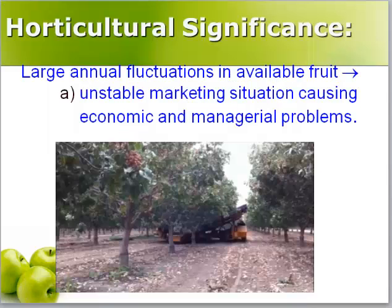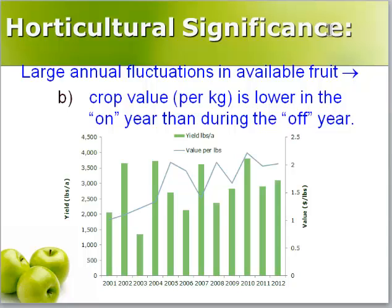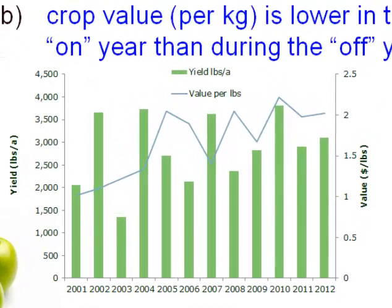Large annual fluctuations in available fruit can cause unstable marketing conditions, resulting in economic and managerial problems. For example, machines such as harvest equipment still need to be maintained and serviced even during low crop years where they are used very sparingly. Large annual fluctuations in available fruit can also result in lower crop values in on versus off years. The green bars represent average California pistachio yields and the blue line represents the value in dollars per pound. There is a trend for higher prices during off, lightly cropping years and lower prices during heavily cropping years.